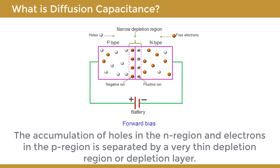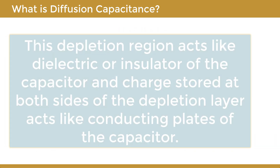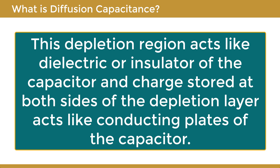The accumulation of holes in the N region and electrons in the P region is separated by a very thin depletion region or depletion layer. This depletion region acts like the dielectric or insulator of a capacitor, and the charge stored at both sides of the depletion layer acts like the conducting plates of the capacitor.